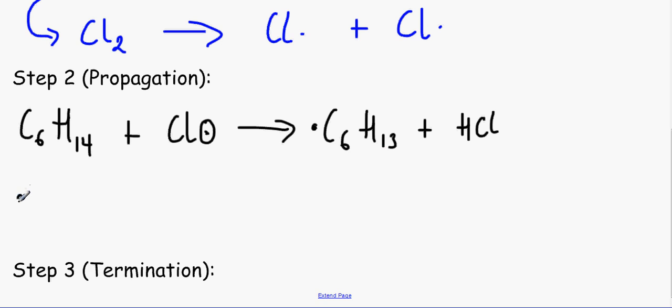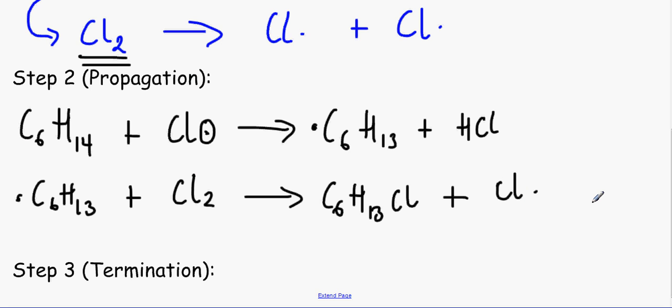That's the first step of the propagation step. The second step is we have this C6H13 radical. We've got lots of this, by the way. It is in excess. You can't just have one molecule of Cl2. We have lots of it. So it will react with a chlorine molecule, which will make this split up through homolytic fission.